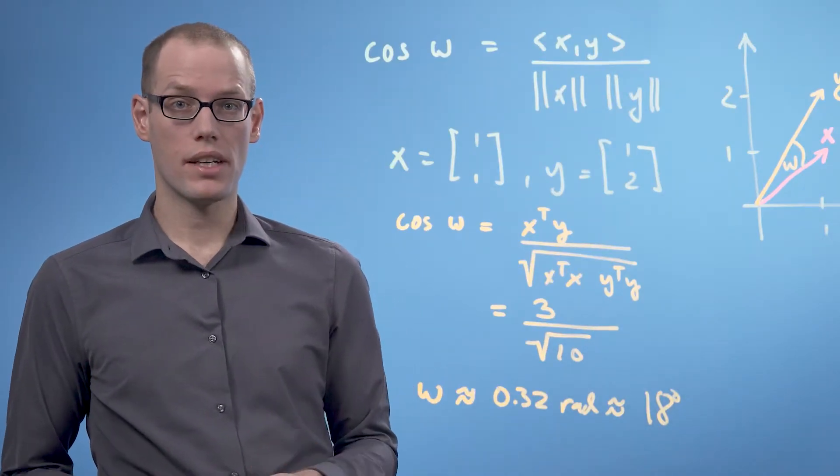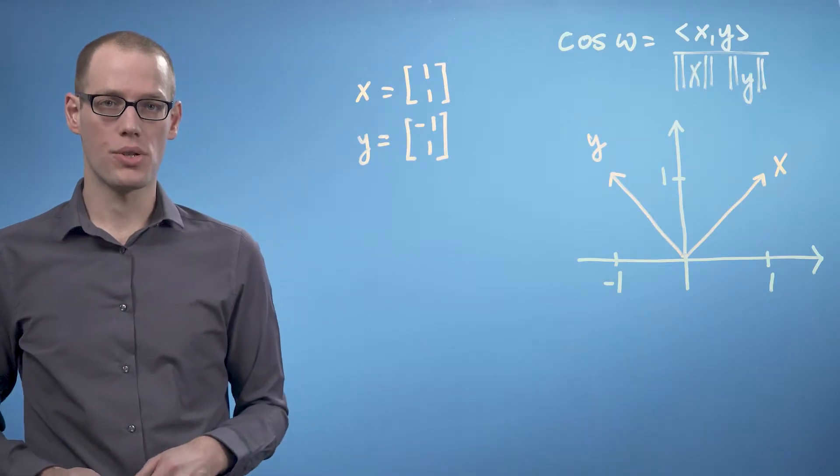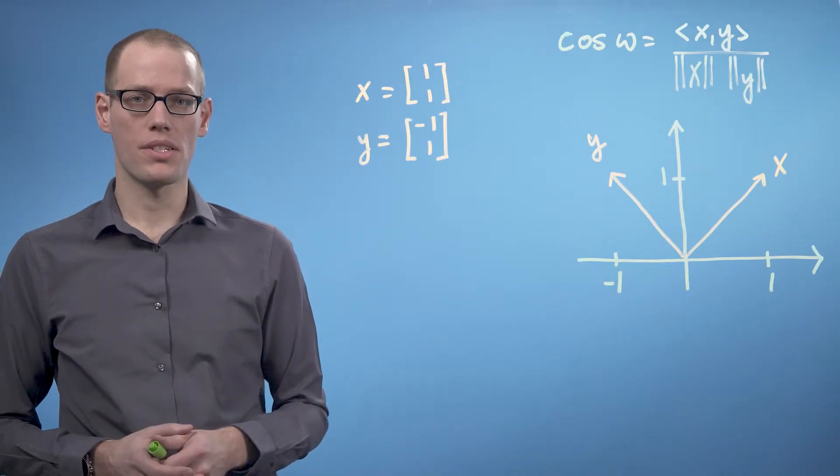Intuitively, the angle between two vectors tells us how similar their orientations are. Let's look at another example in 2D, again with the dot product as the inner product.